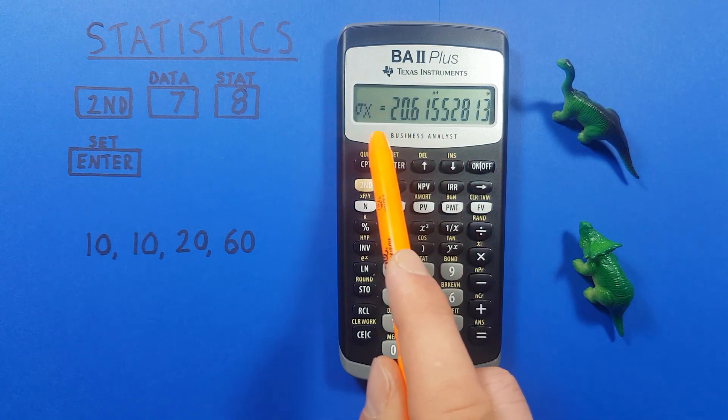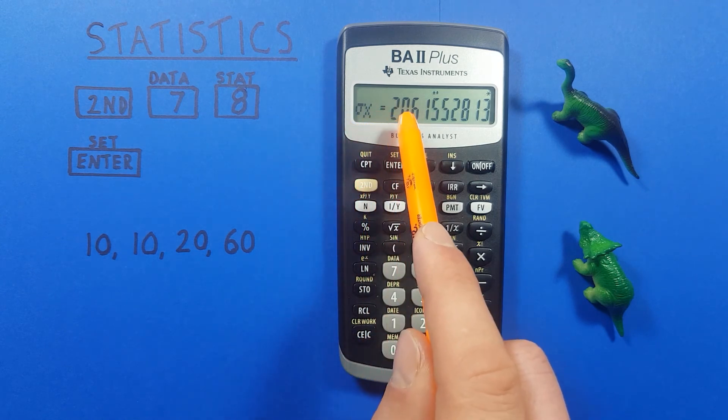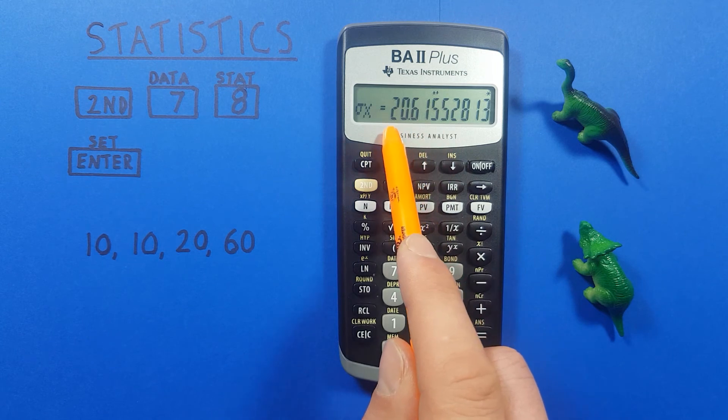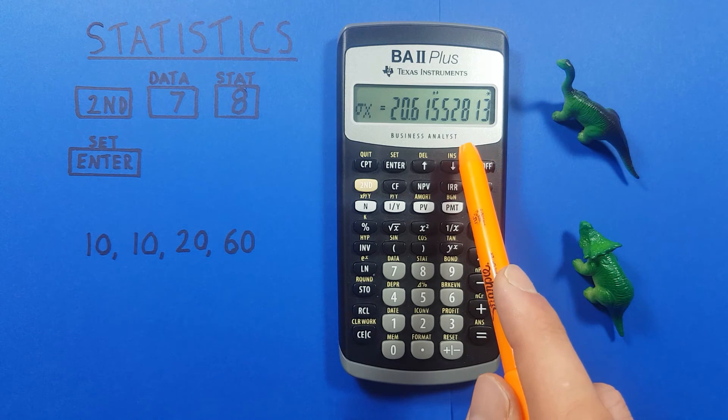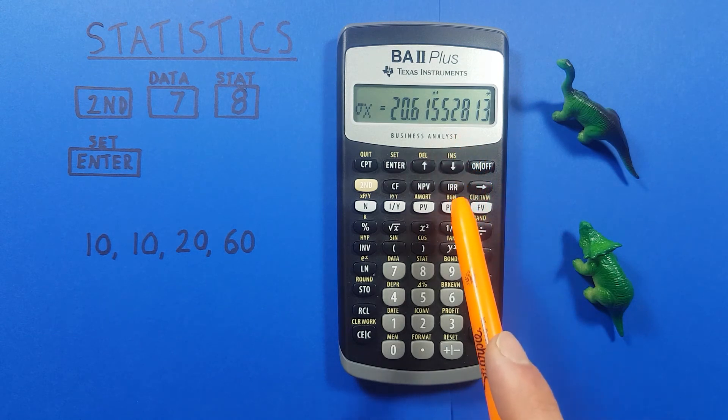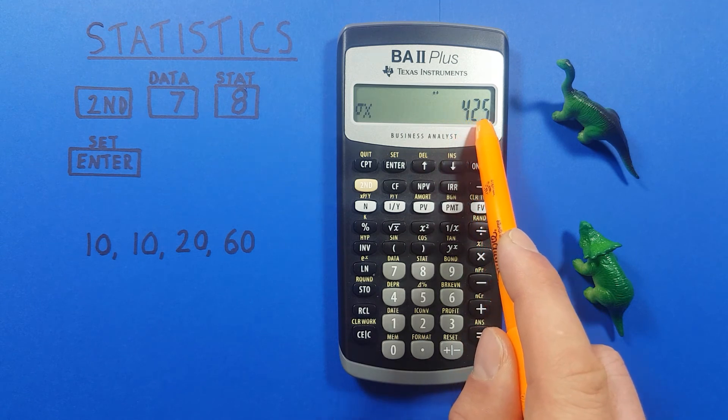Press down again and we get the small sigma x or the population standard deviation of 20.6155. And again we can calculate the population variance by pressing the x squared key and we see we get a variance of 425.